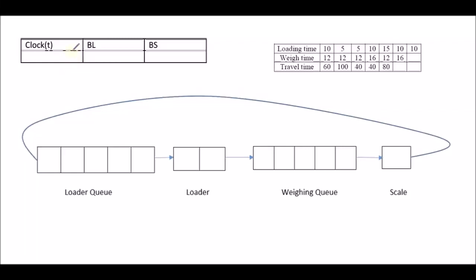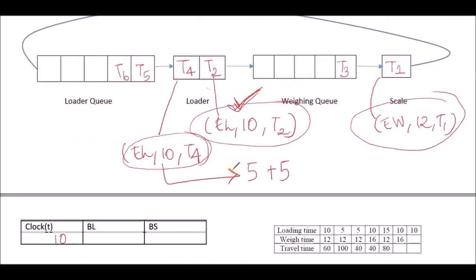After choosing the imminent event in the previous step, we get clock at time instance T=10. This is going to remain the same as the previous one except for the imminent event chosen, and the imminent event chosen is that truck T2 finishes loading. This is going to come here, and one of the loaders is empty because T2 has finished its task.